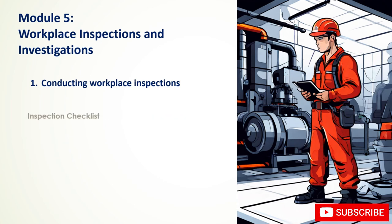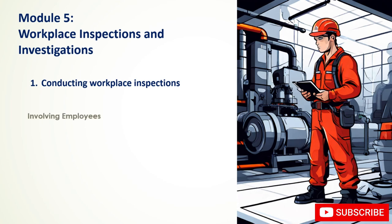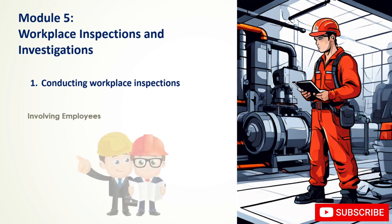An inspection checklist helps ensure thoroughness. Typical items include housekeeping and cleanliness, emergency exits and signage, electrical safety, machinery and equipment, ventilation and lighting, PPE usage, material handling and storage, chemical storage and handling, ergonomics, and emergency procedures. Employee involvement is crucial — encourage employees to report hazards and provide feedback on working conditions.